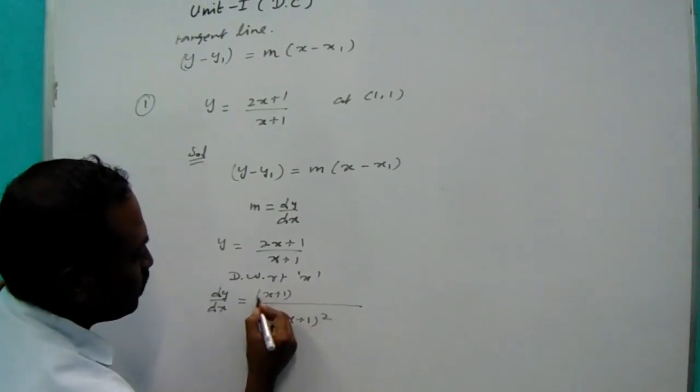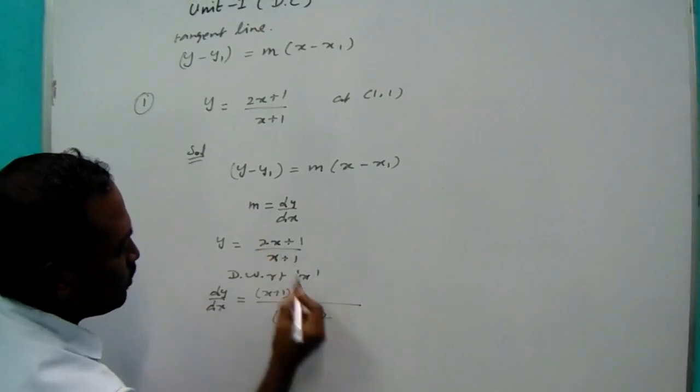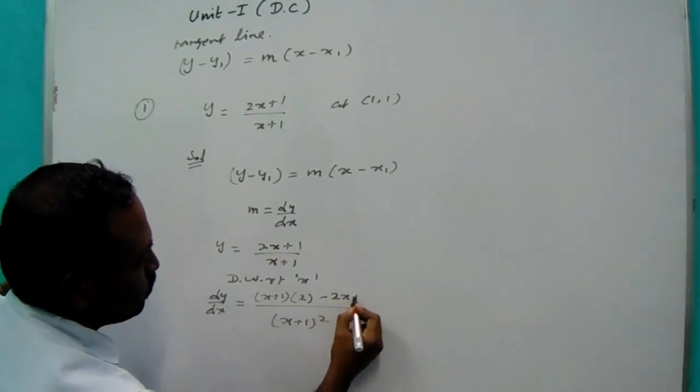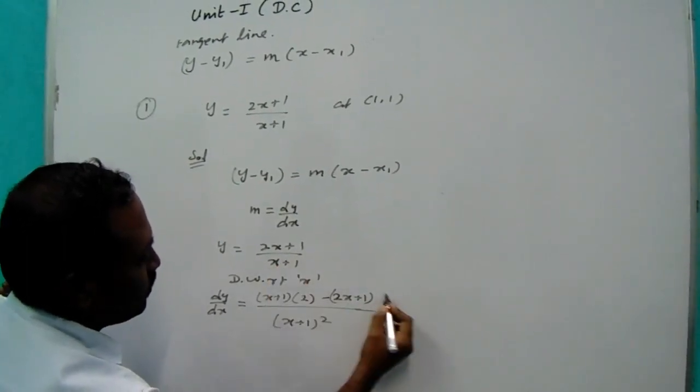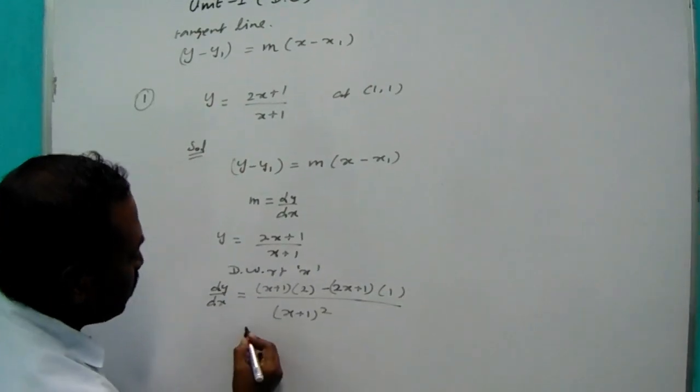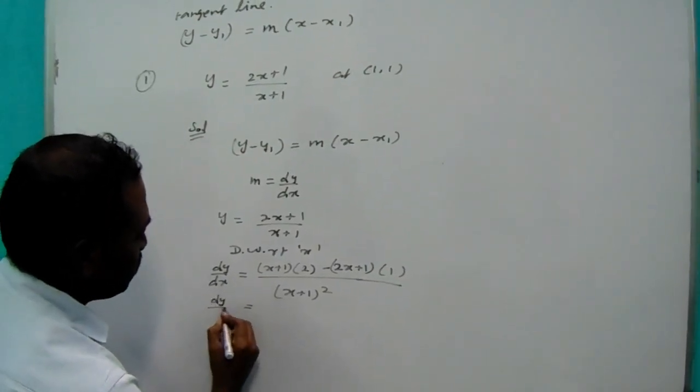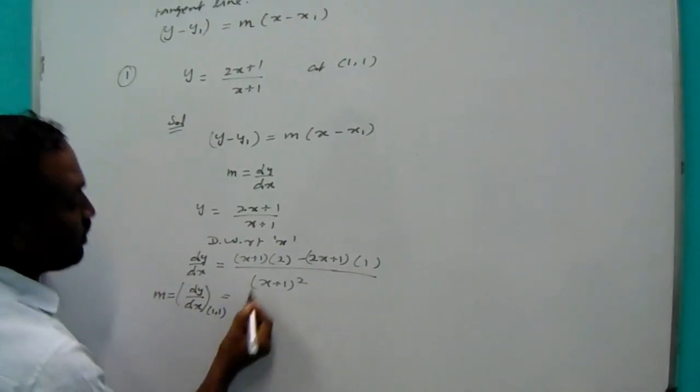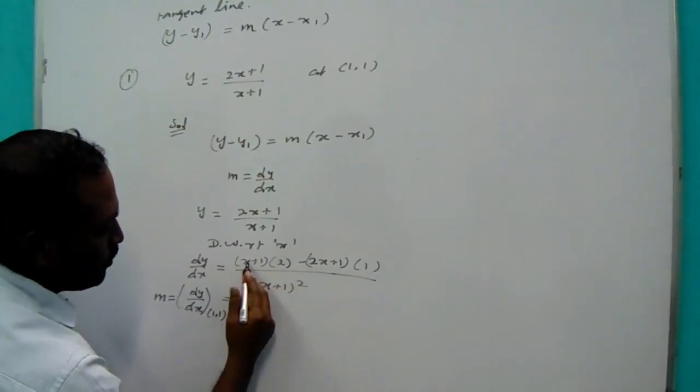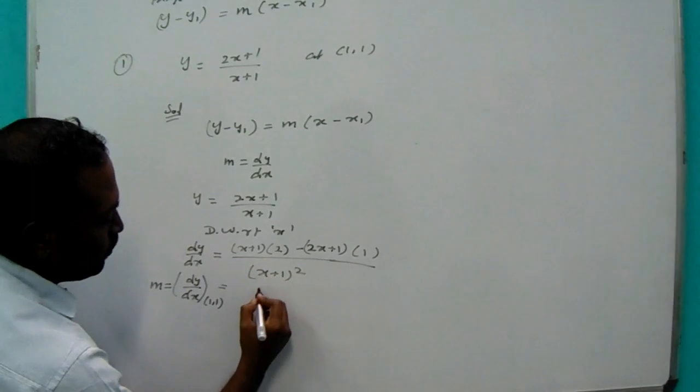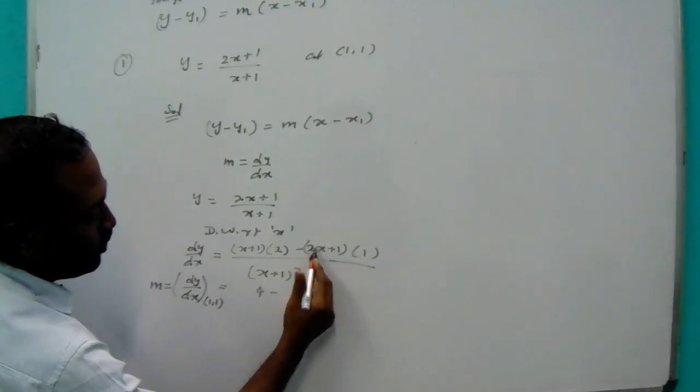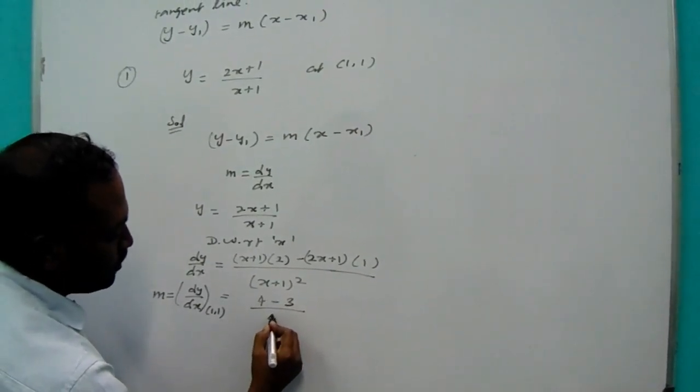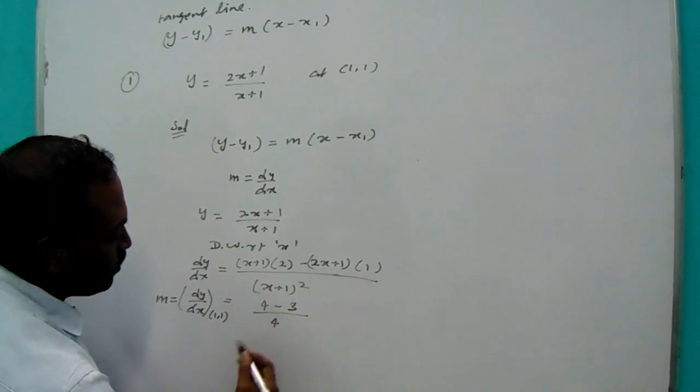Apply the point 1,1. They are given, so apply 1,1. You got 1 plus 1, 2, then 2 square means you got 4. Actually you got 1 by 4 for the value.